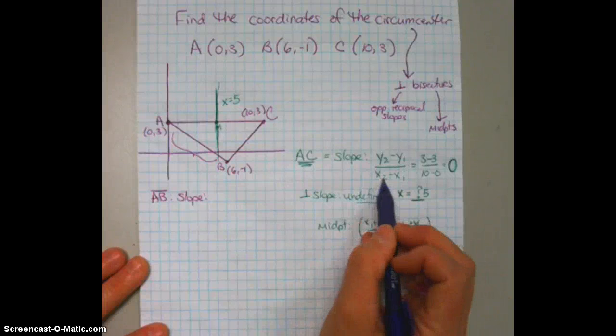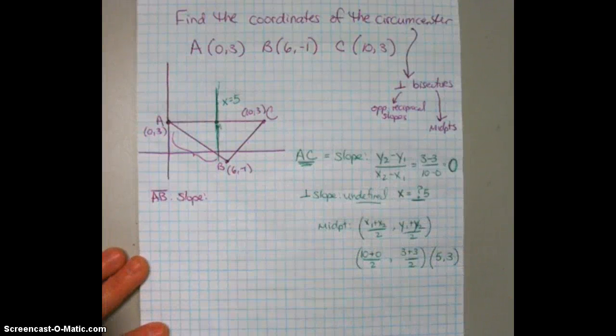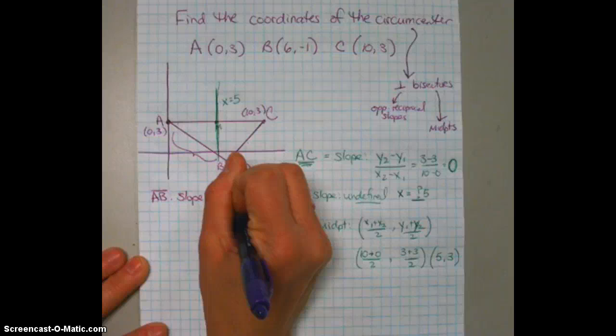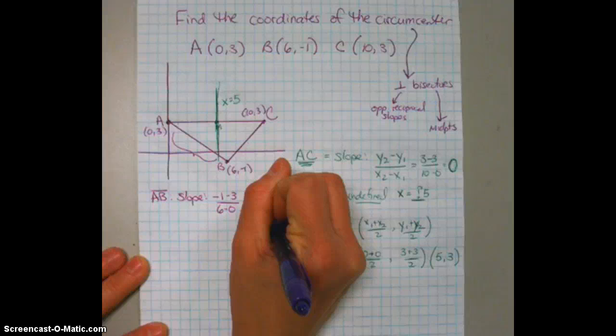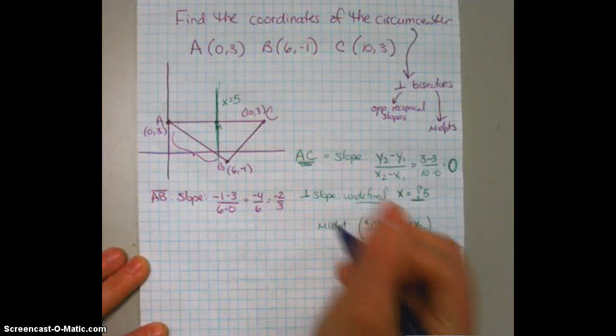So remember, here's our equation, y2 minus y1, x2 minus x1. So, negative 1 minus 3 over 6 minus 0. So that's negative 4 over 6, which is negative 2 thirds.